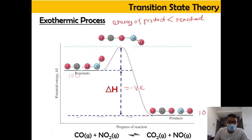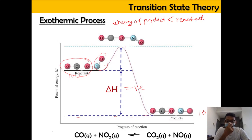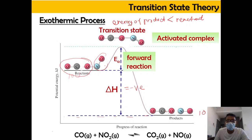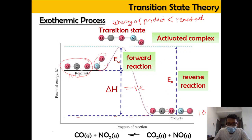Here at the top is the activated complex, where the atoms almost form a bond, then that bond almost breaks apart, and at the last step the bonds fully break and form. The activation energy is the energy barrier that needs to be overcome by the reactant in order to form the transition state — the activated complex. The reverse activation energy is the energy the product must overcome to go back to reactant, which is larger than the forward activation energy.